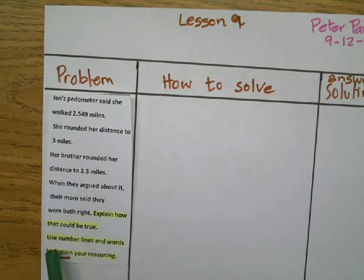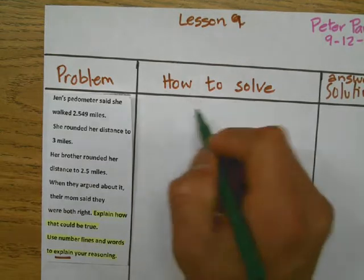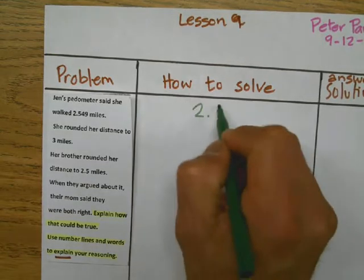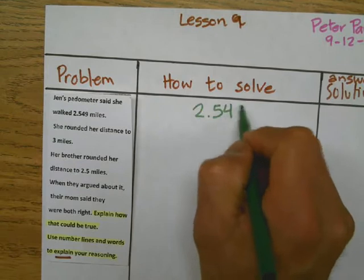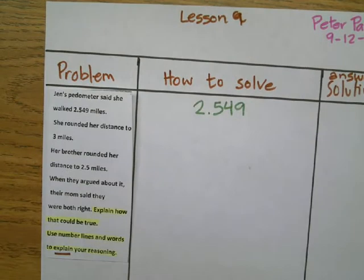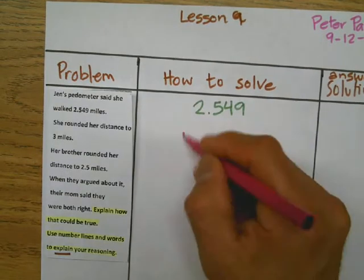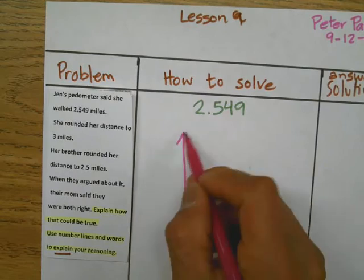Explain how that could be true. Use number lines and words to explain your reasoning. So here's what we've got to do, my friends. When you round numbers, here's a number and you have two different answers.